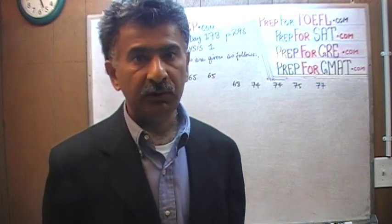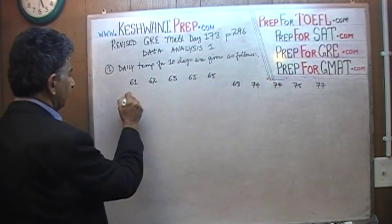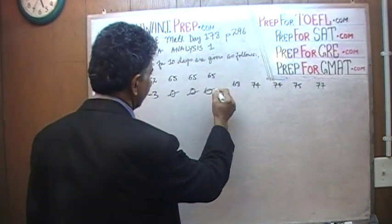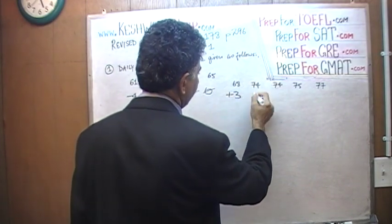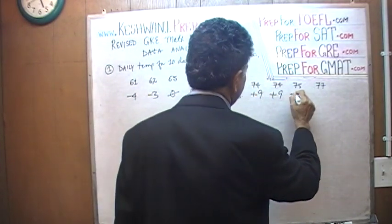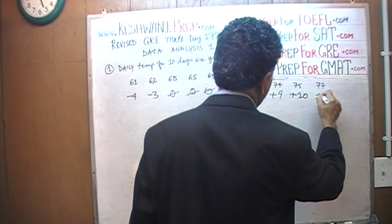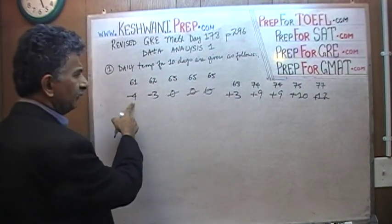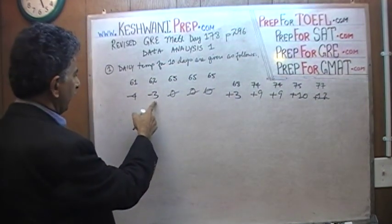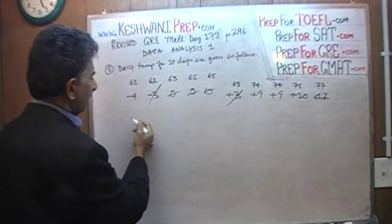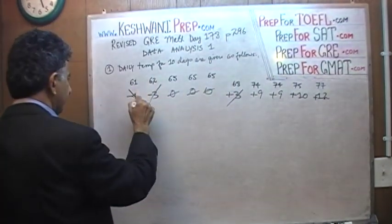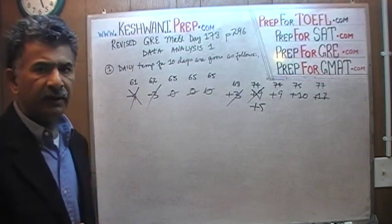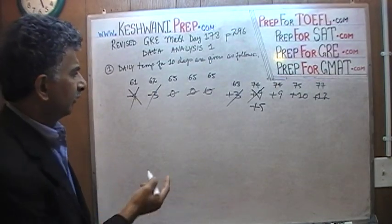61 is 4 less than 65; the next is 3 less; then exactly 65, 65, 65; this one is 3 more; this is 9 more; this is 9 more; this is exactly 10 more; and 77 is 12 more. Now I see a negative 3 and a positive 3 — they cancel out. I see a negative 4 and a positive 9 — cancel out the negative 4, and that becomes positive 5.